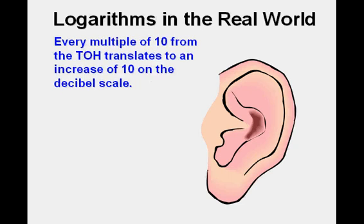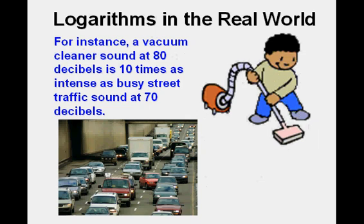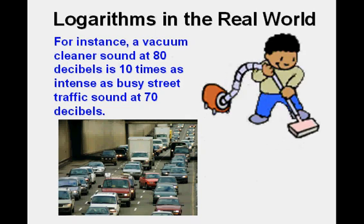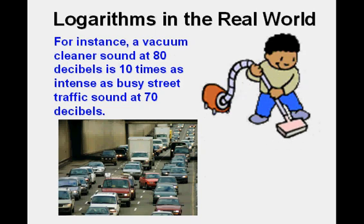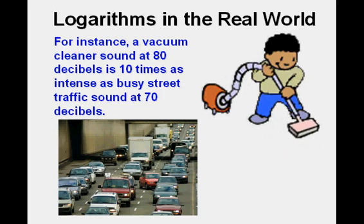Every multiple of 10 from the threshold of hearing translates to an increase of 10 on the decibel scale. For instance, a vacuum cleaner sound at 80 decibels is 10 times as intense as busy street traffic sound at 70 decibels.